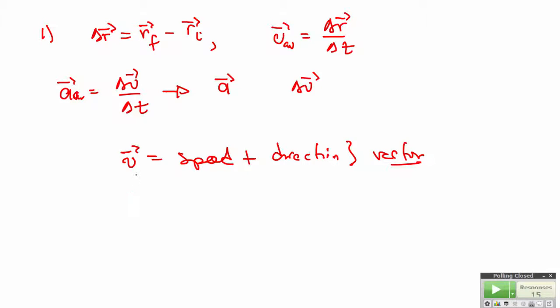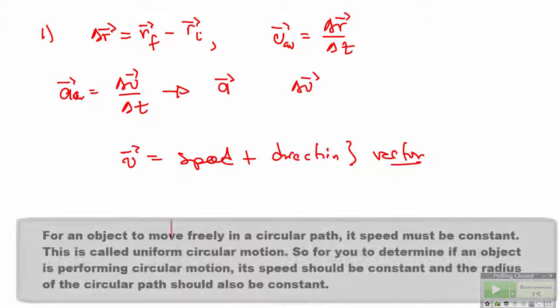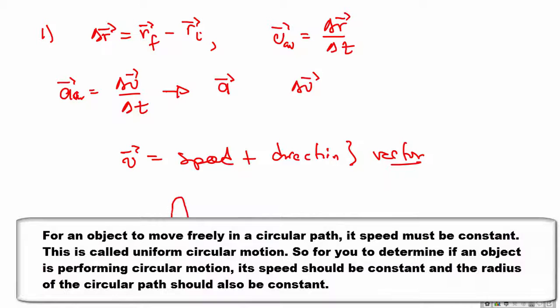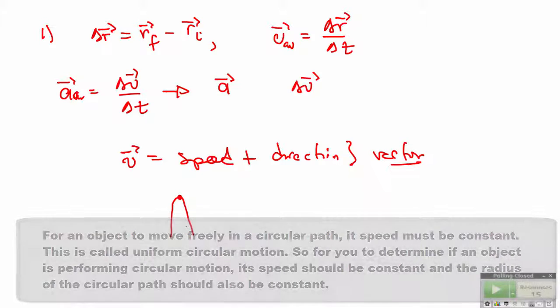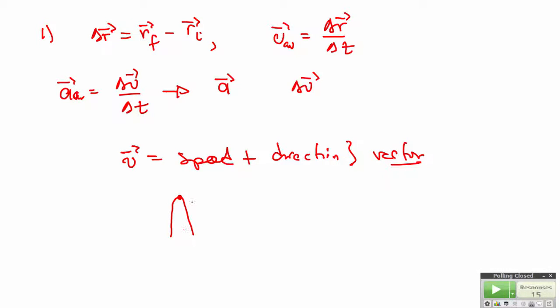The velocity of an object can change in three different ways. First, if the speed changes — for example, if a car speeds up or slows down along a straight path. Second, both the speed and direction can change — for example, an object projected upwards: as it goes up the speed decreases, at maximum height the speed is zero, as it falls the speed increases. In this case both the magnitude and the direction change, as we studied in detail under projectile motion.